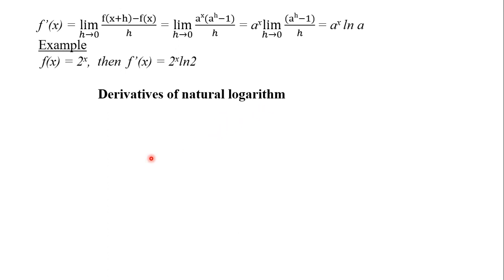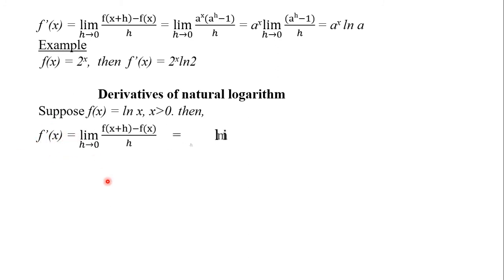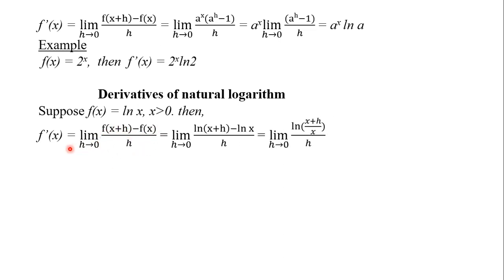Next is the derivative of the natural logarithm. Suppose f(x) = ln x, where x is greater than 0. It can be calculated as f prime at x equals the limit of f(x + h) minus f(x) over h as h approaches 0, which equals the limit of [ln(x + h) minus ln x] over h, which simplifies to the limit of ln((x + h)/x) over h.